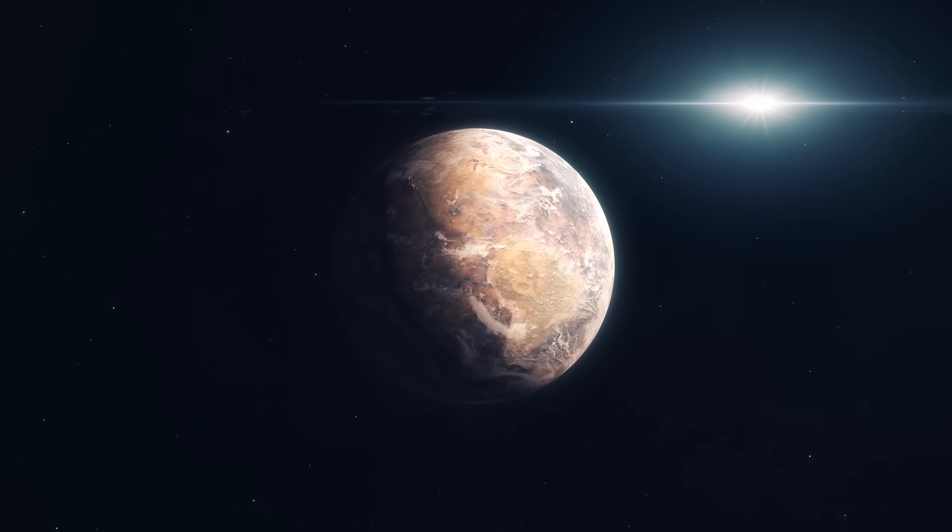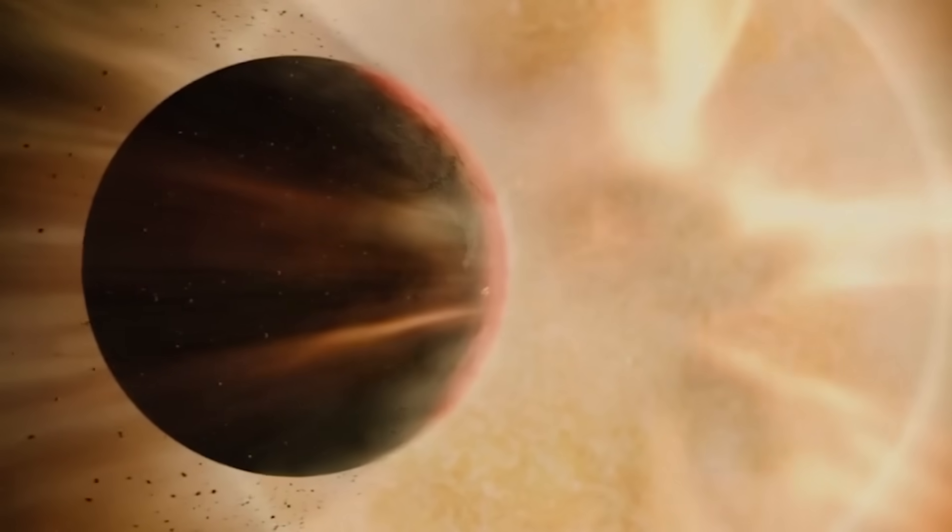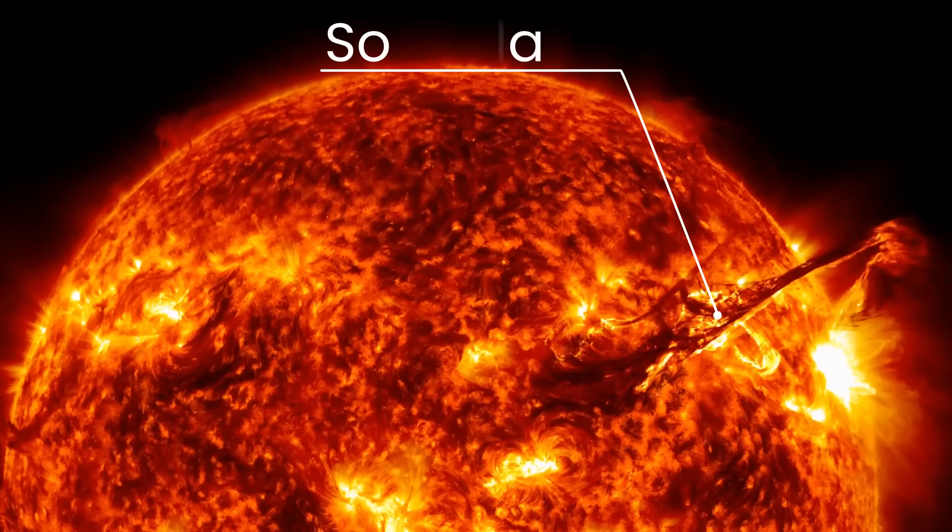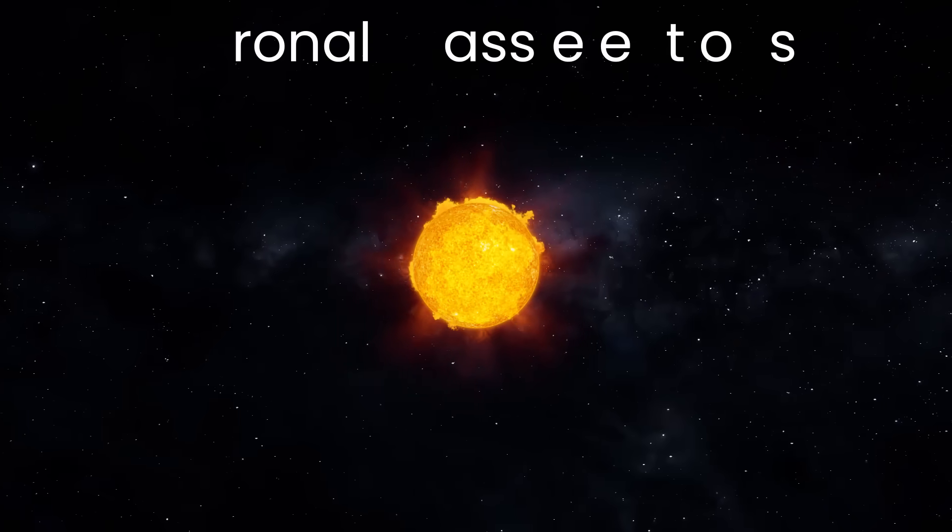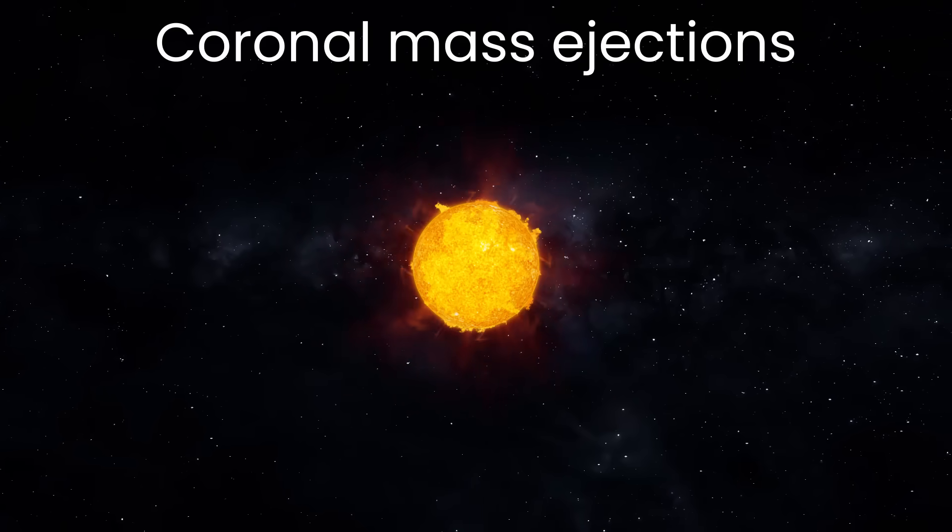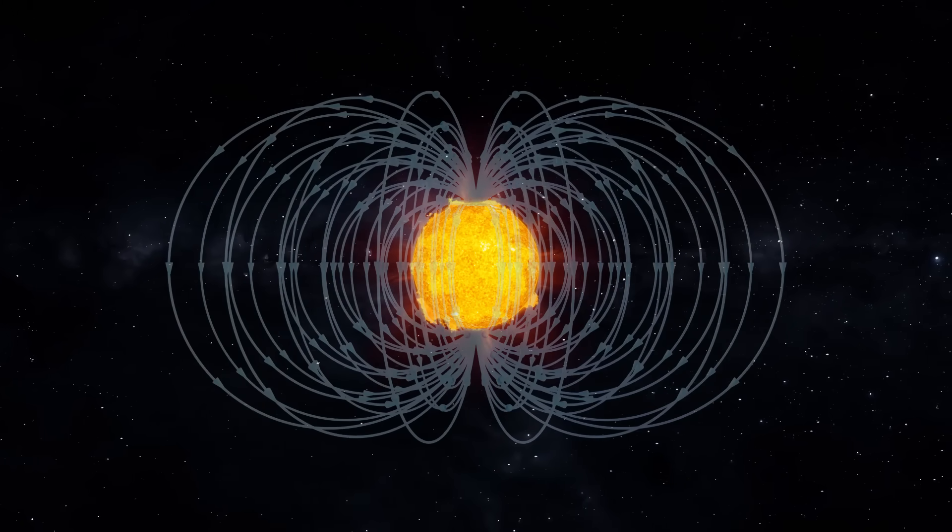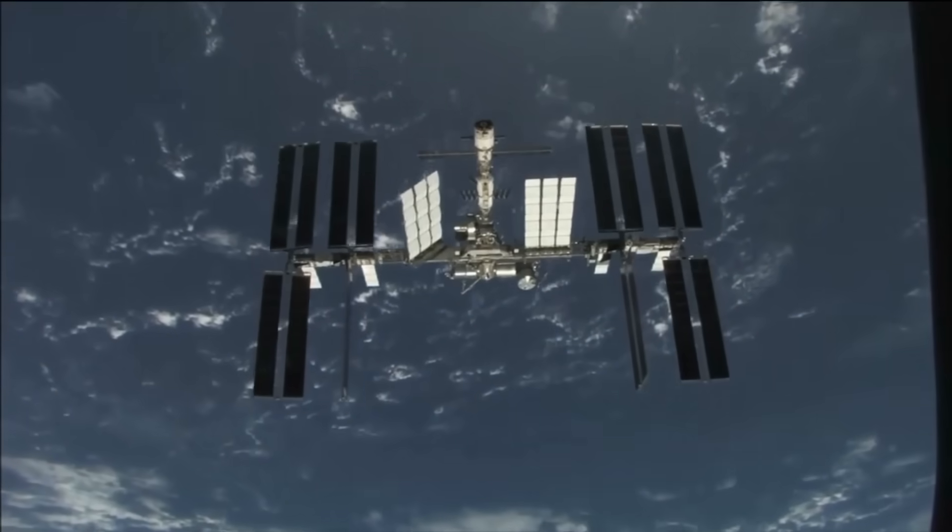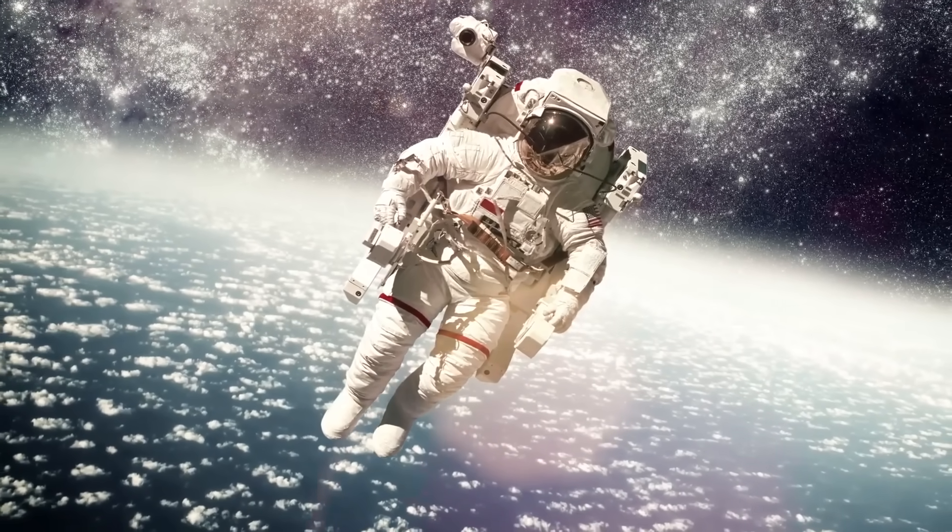Without the sun, no life on Earth would be possible. But this gigantic ball of hot plasma can also threaten us. Its bursts of radiation, also known as solar flares, and its explosive ejections of plasma called coronal mass ejections, accompanied by intense magnetic fields, can be frightening. Even though the sun's activity causes spectacular auroras on Earth, spacecraft, satellites, high-flying airplanes, and even astronauts can be in danger.